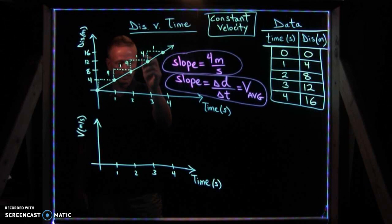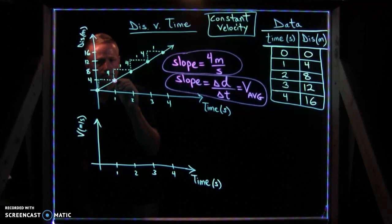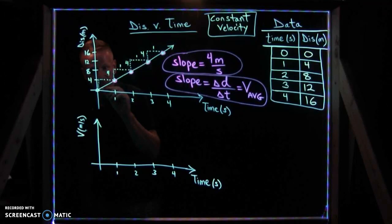So what would that look like on a graph representing the velocity versus time? Well, first you can see that your velocity is always four meters per second at every second. You are constantly moving at four meters per second.